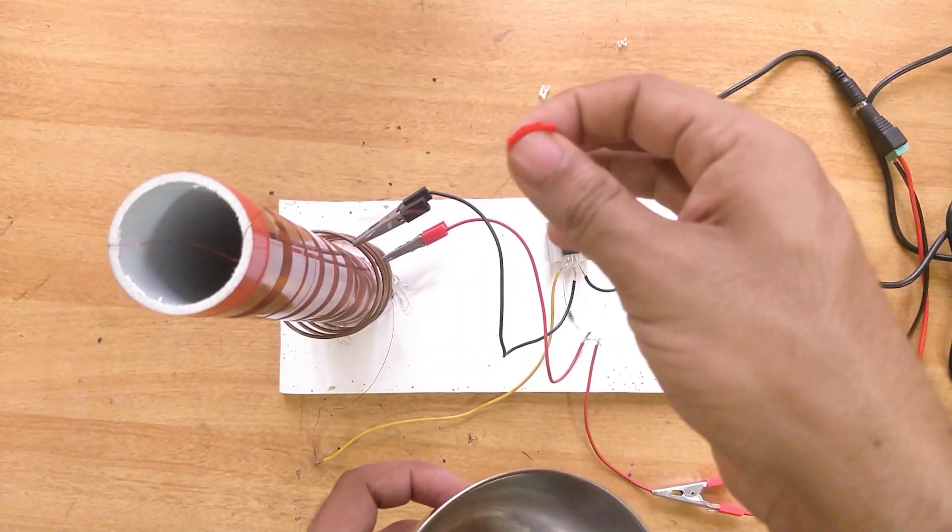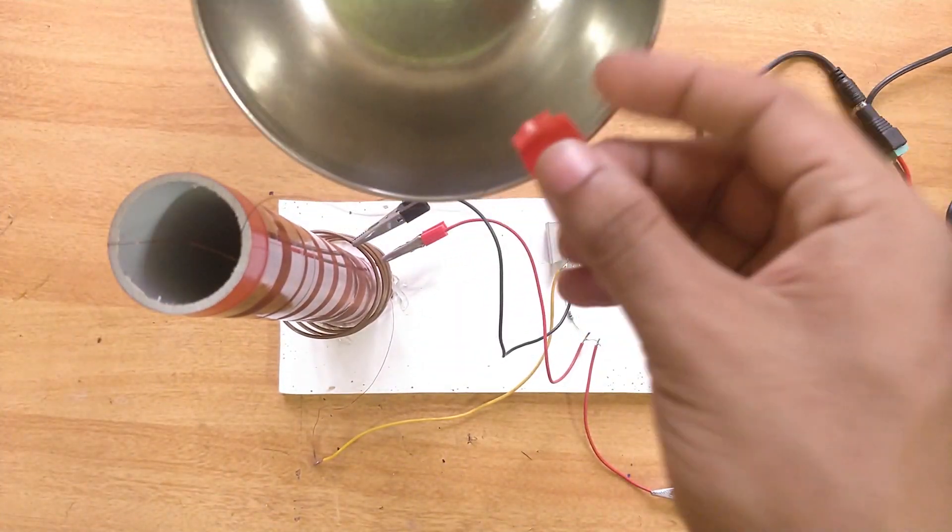Now let's add a metal plate onto the secondary winding so that it will act as a capacitor and store the charge.